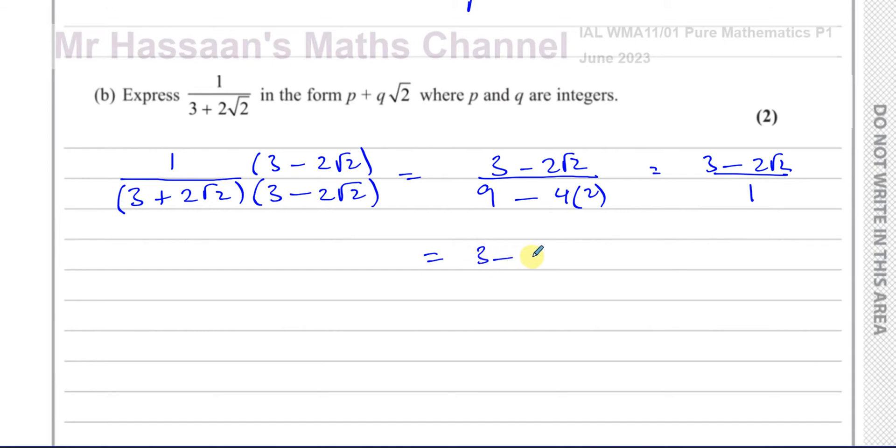So you end up with 3 minus 2 root 2 over 9 minus 8, which is 1. So that just gives you 3 minus 2 root 2. It doesn't always end up that this becomes the same thing with the different sign. It just happened in this case because the denominator became 1. So there we have the answer to part B.